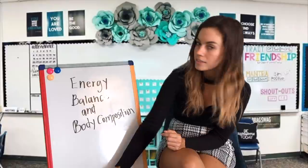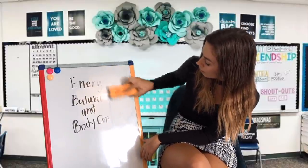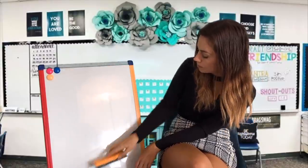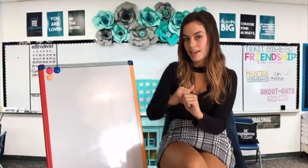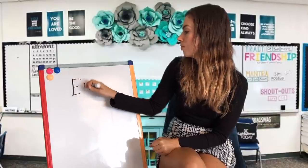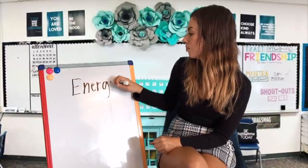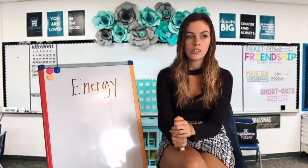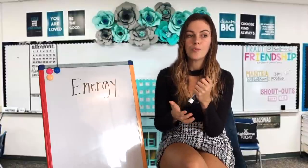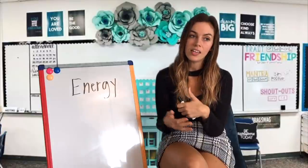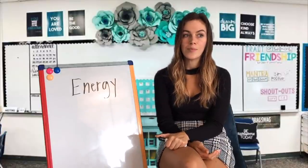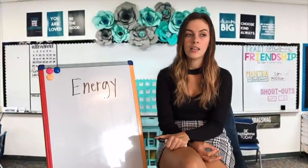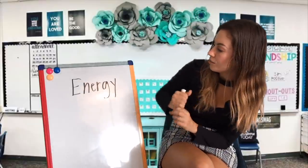To start off, we're going to talk about energy and energy balance in the body. Energy is the capacity to do work. We need energy for our basal metabolism, which is just basal metabolic rate. BMR is the energy required for activity of the internal organs and maintaining body temperature. Energy is also needed for physical activity and breaking down food.